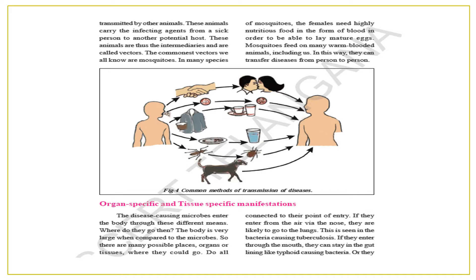Looking at the common methods of transmission of diseases: organ-specific and tissue-specific manifestation. The disease-causing microbes enter the body through different means. Where do they go then? The body is very large when compared to the microbes. So there are many possible places — organs or tissues — where they could go.